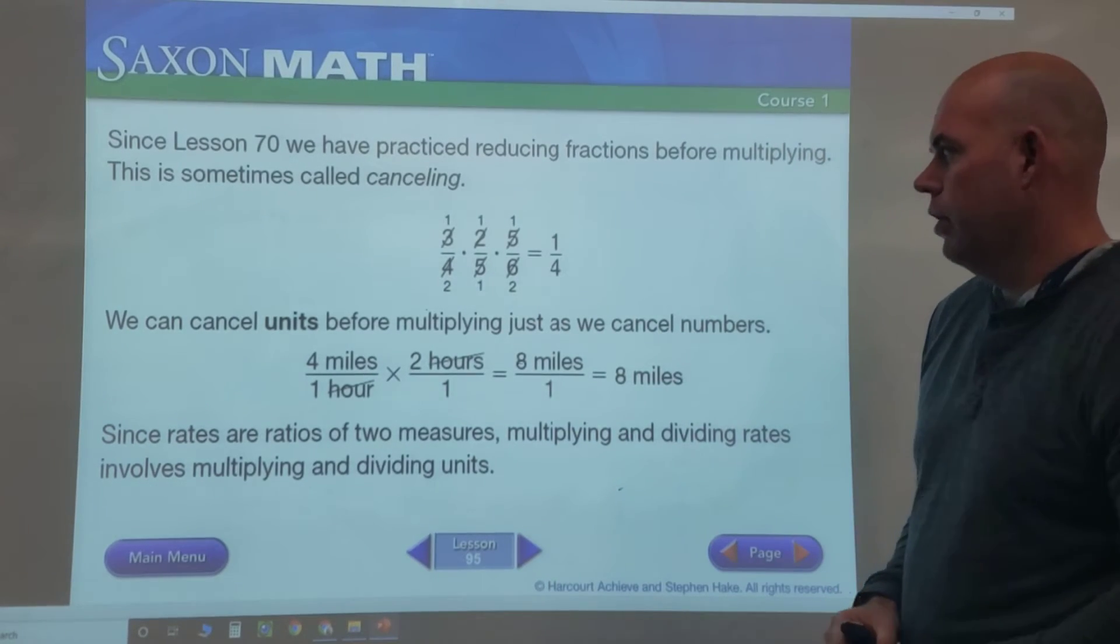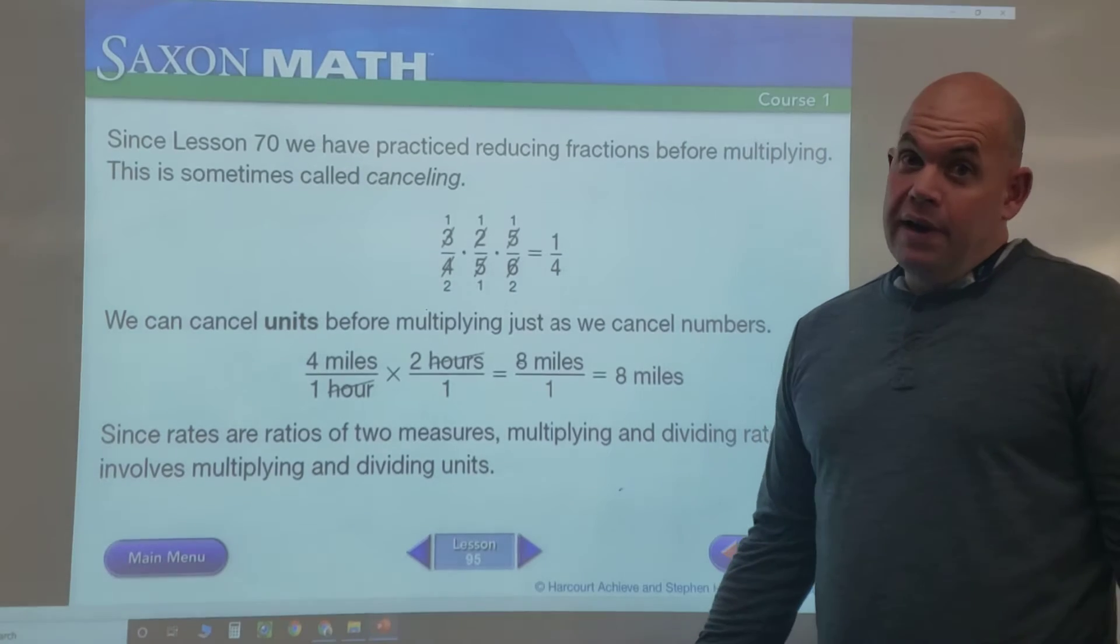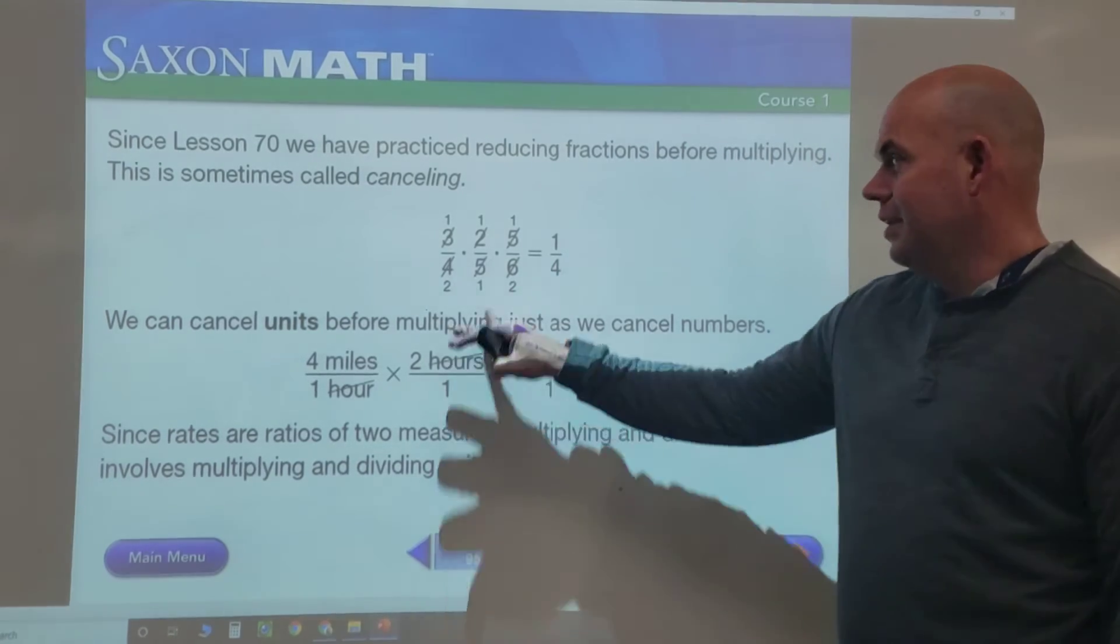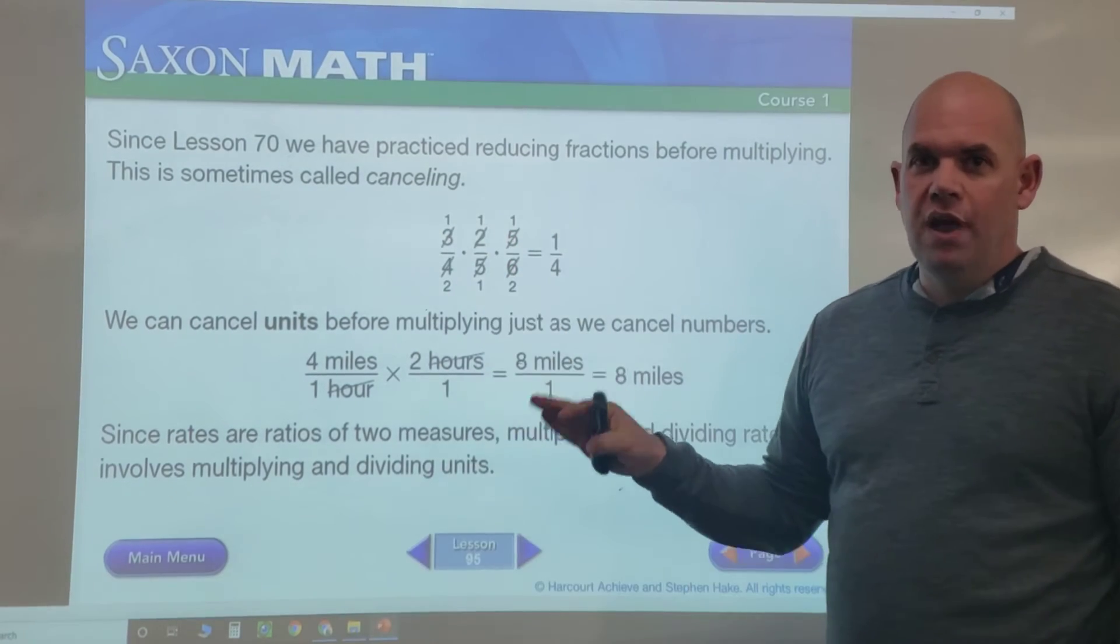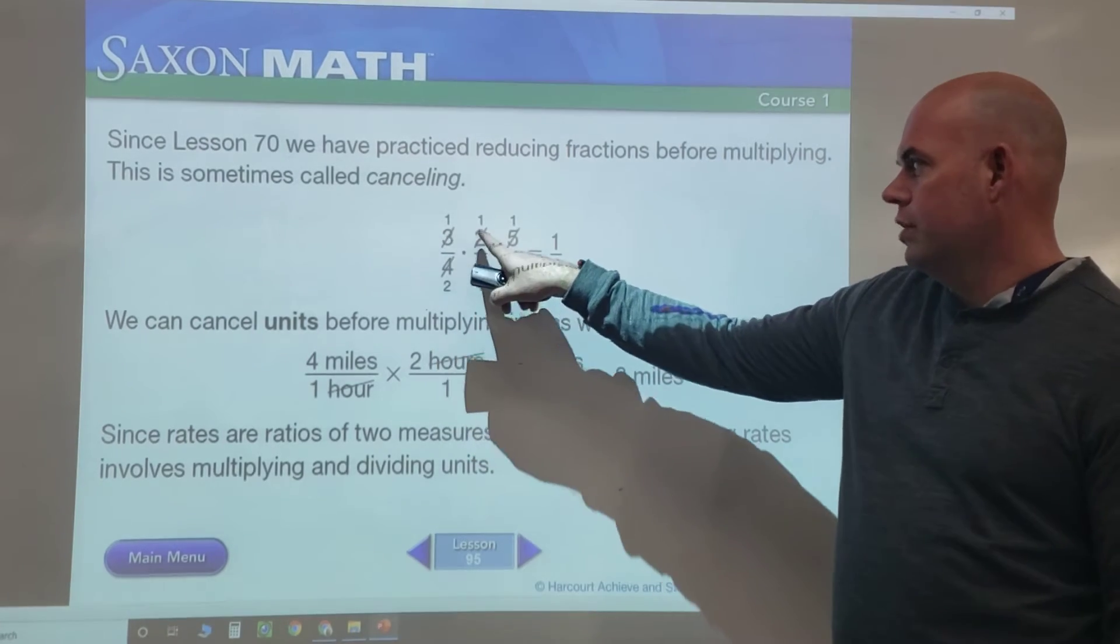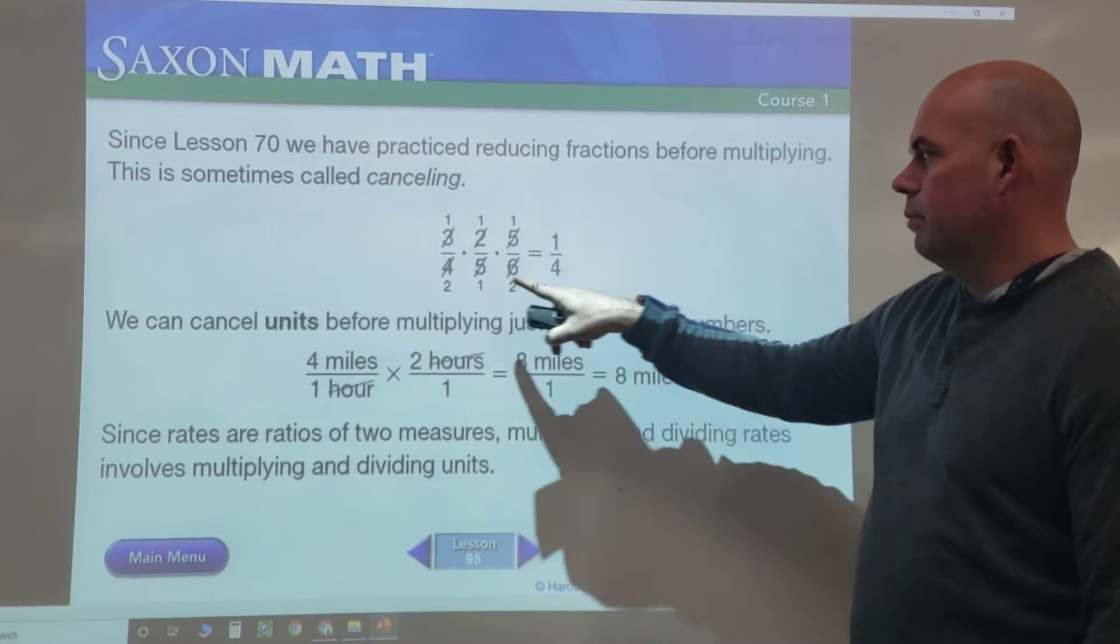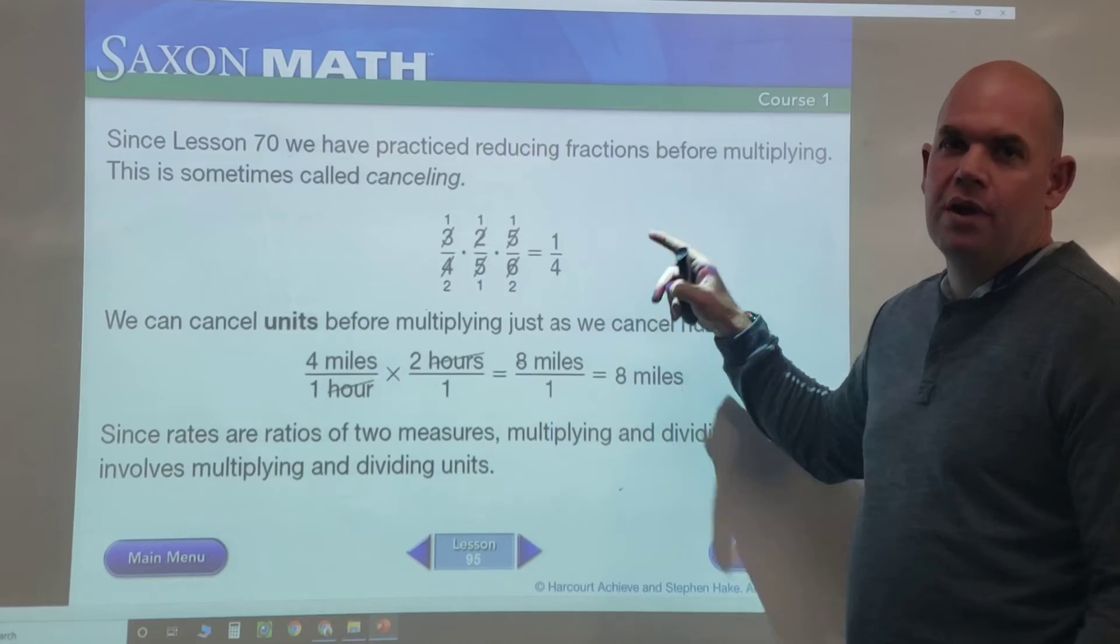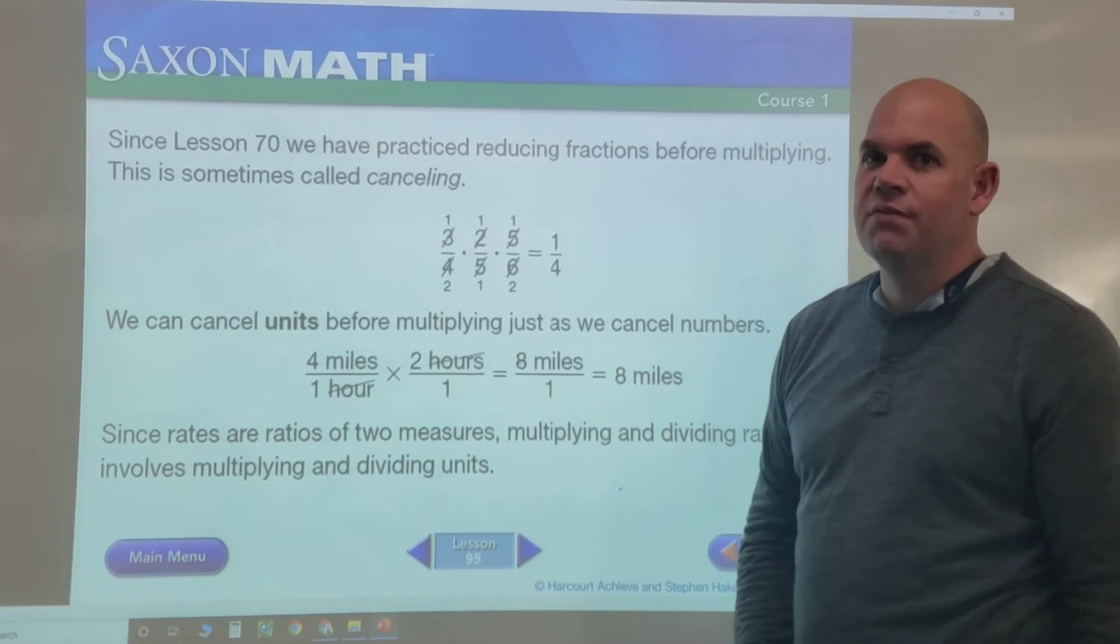We get 1/4. That seemed like a lot of work, but it was a lot faster than if we just multiplied 3 × 2 × 5, got a big number, then 4 × 5 × 6, got another big number, and then had to reduce. It's just a different way of doing it. Both ways work.